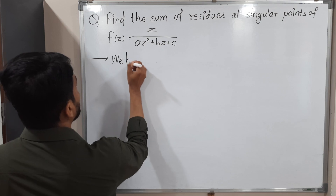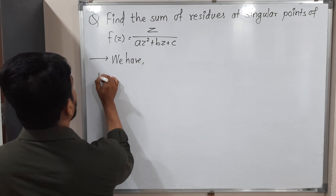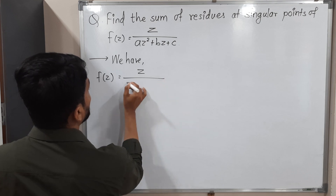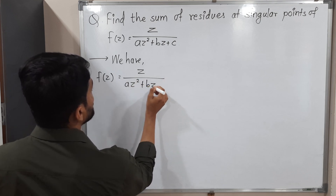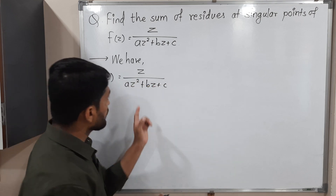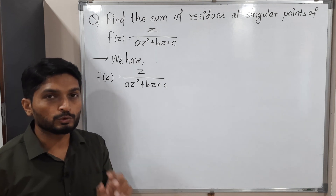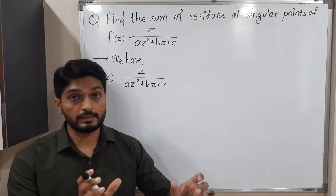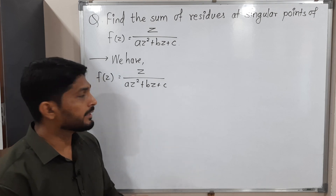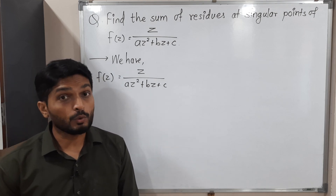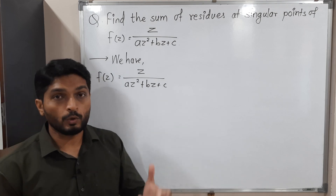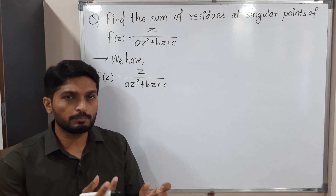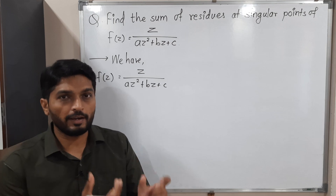We have f(z) equal to z upon az² + bz + c. So this is a polynomial of degree 2. Generally what we do, we express it in terms of factors. But it is a very difficult task here because a, b, c are constants which are not given — values are not given to them. So it is not easily possible to express it as factors.